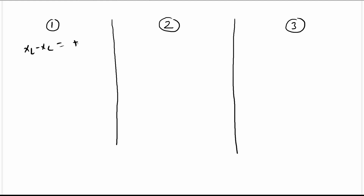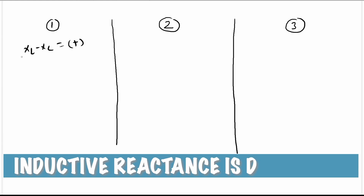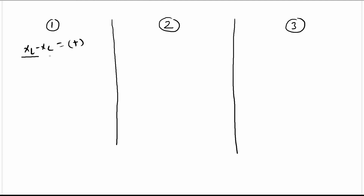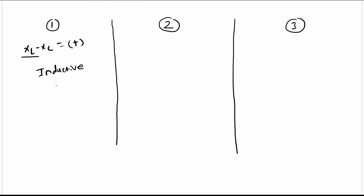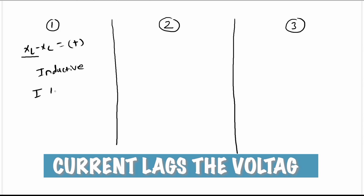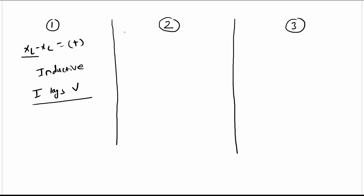In such a case the circuit operates or acts like an inductive circuit, and in that case the current lags the voltage. If the value of inductive reactance is lesser than the capacitive reactance, then the RLC circuit acts as an inductive circuit. That is condition one.